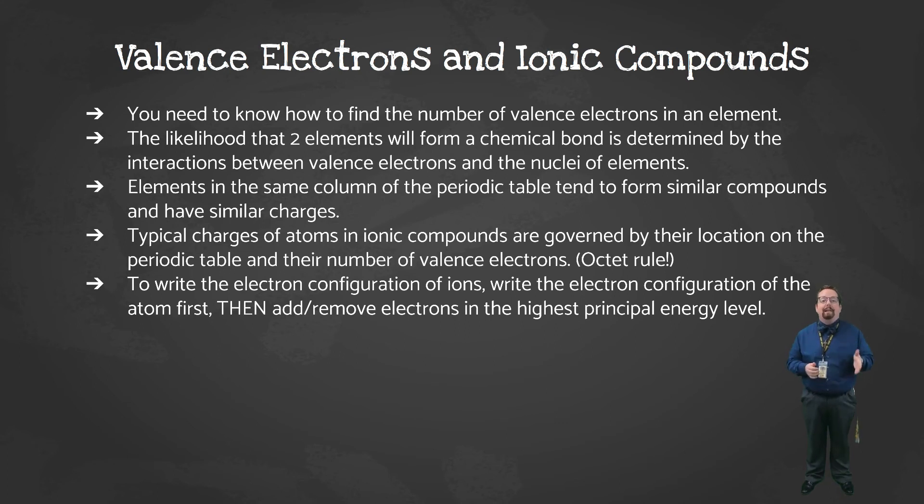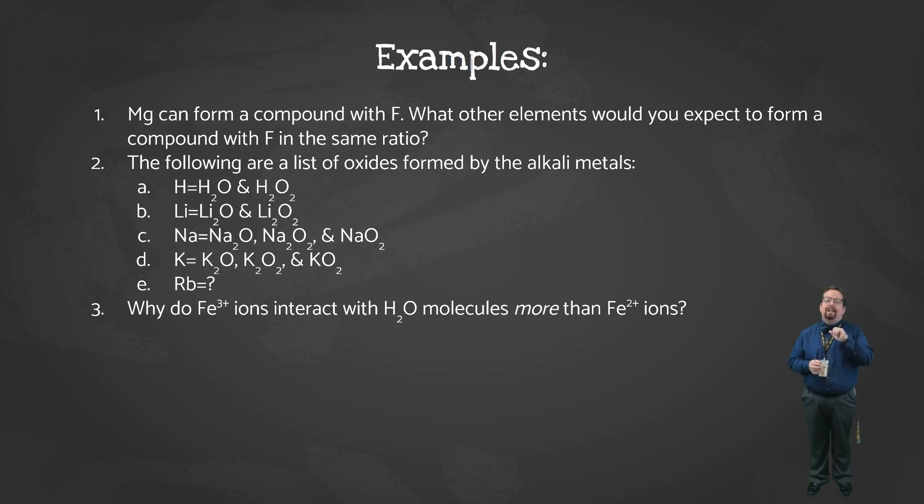Knowing how to find the electron configuration and how to determine the number of valence electrons is extremely important when characterizing our elements. The interactions between valence electrons and the nuclei of elements determine how likely two elements are to form a chemical bond. Since elements in the same column of the periodic table have the same number of valence electrons, they tend to form similar compounds and form ions with similar charges. When atoms form ionic compounds, the charges they form are governed by their location on the periodic table and how many valence electrons they have. Remember, the octet rule says that atoms want to have at least eight electrons in their outer shell. To do this, atoms will gain, lose, or share electrons until they get there. When writing the electron configuration of an ion, you'd write the electron configuration of the atom first, and then add or remove electrons in or from the highest principal energy level. This will make more sense as we practice it, but basically, you can learn just about everything you need to know by looking at an element's location on the periodic table.